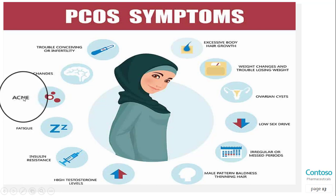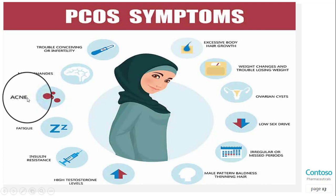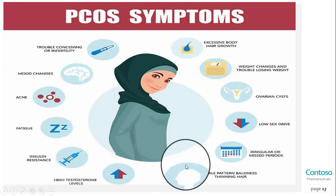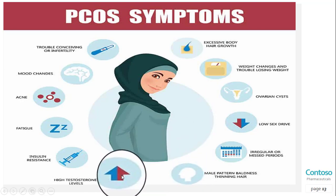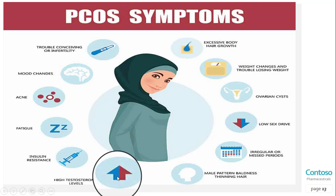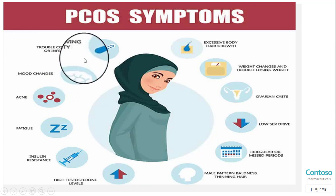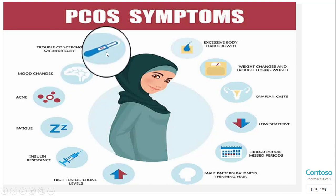The fifth symptom is weight gain — up to 80 percent of women with PCOS are overweight or obese. Sixth is male pattern baldness, where hair on the scalp gets thinner and falls out. Seventh is darkening of the skin — dark patches can form in body creases such as on the neck, groin, and under the breasts; this is called acanthosis nigricans. Finally, some hormonal changes can trigger headaches in women suffering from PCOD.